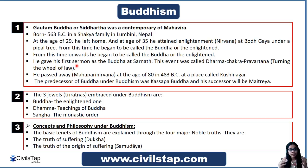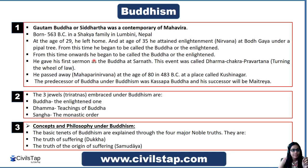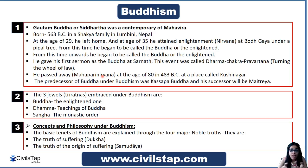First, let's look at basic information about Gautam Buddha. Gautam Buddha was also known by the name Siddhartha. He was a contemporary of Mahavir, who is related to Jainism. He was born in 563 BC in a Shakya family in Lumbini, Nepal. At age 29, he left his house and went in search of enlightenment in the forest. At the age of 35, he attained enlightenment at Bodh Gaya under a Peepal tree.